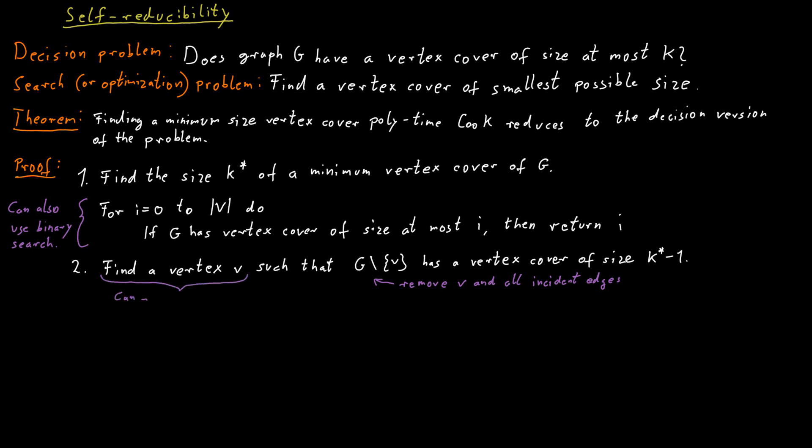So we just go through all the vertices of the graph one by one. We check each one, remove it from the graph, see if the remaining graph has a vertex cover of size at most k star minus 1. If yes, we found a vertex v that works. If no, we move on to the next vertex. Now, important here is that there exists such a vertex for sure. So eventually we will find one.